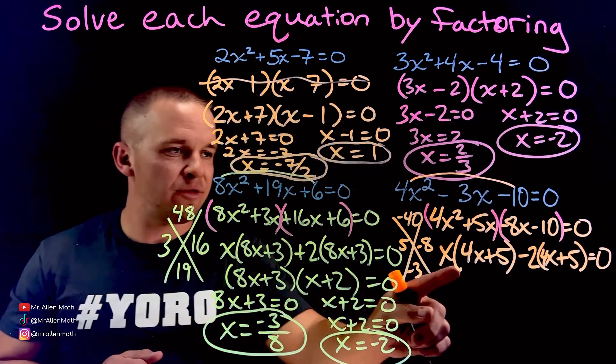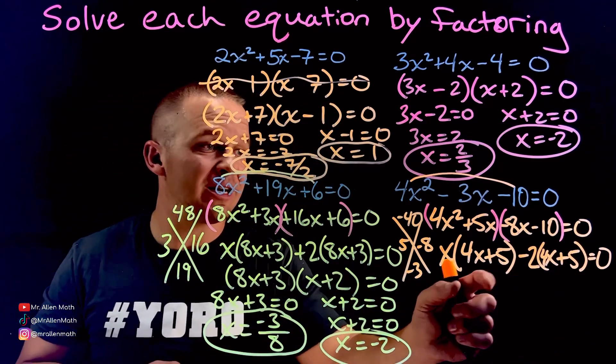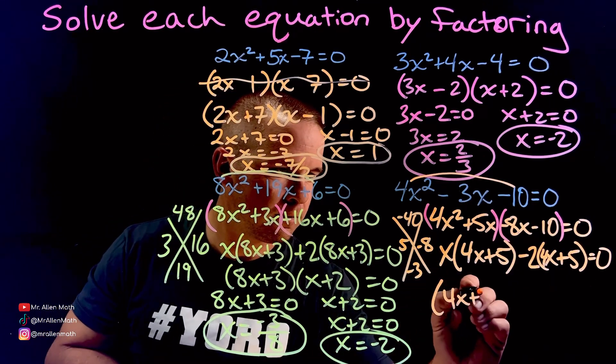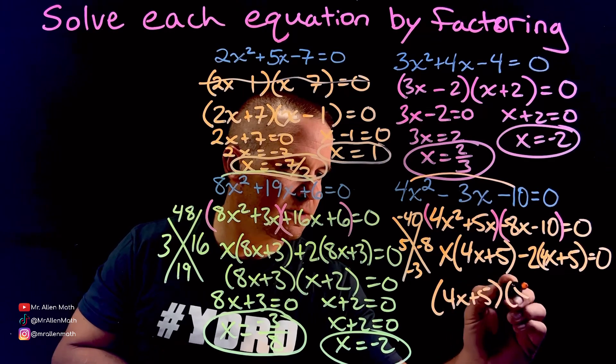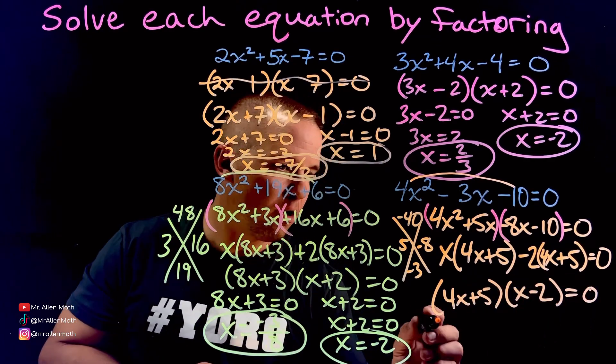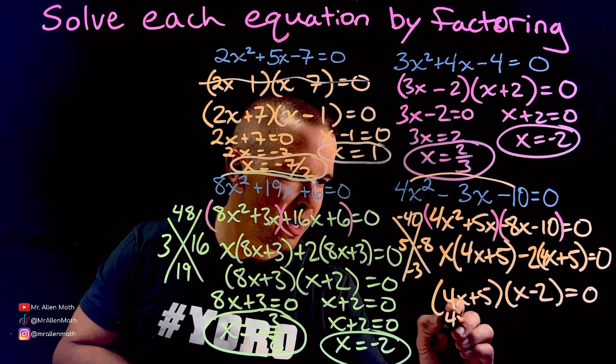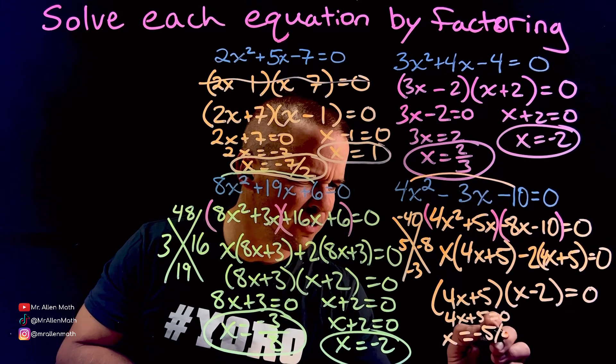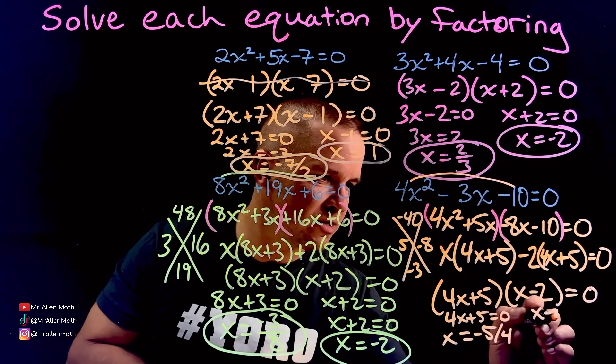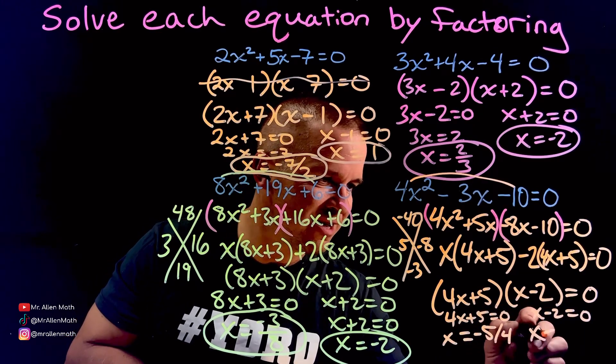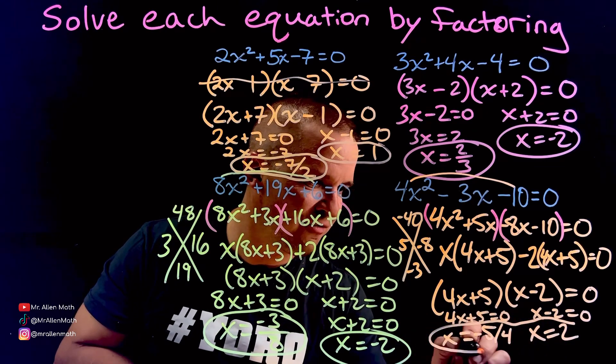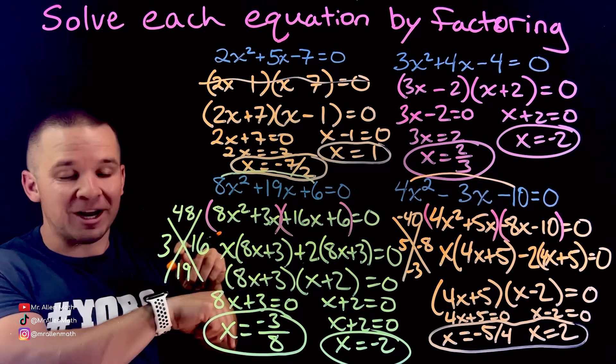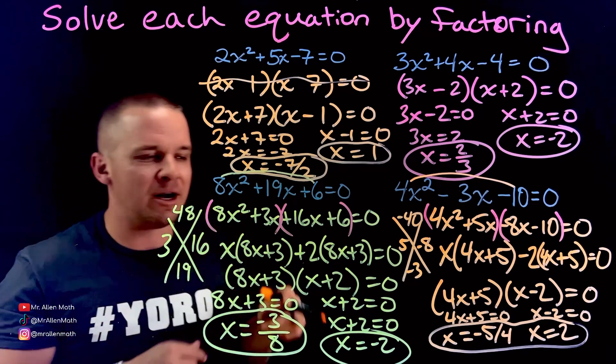Nice. Now we have the 4x plus 5 and the 4x plus 5 in common from these two large terms here. So 4x plus 5 comes out. And then we got x minus 2 left over equals zero. Oh boy. We're going to run short on room here. 4x plus 5 equals zero. I get x equals negative 5 fourths. And over here I get x minus 2 equals zero. So I get x equals 2. Hopefully those all stayed in frame there. We're good. We're good. I got a little camera. Not camera on here, but I can see the screen.